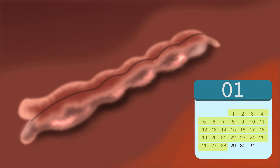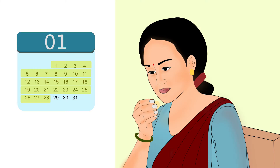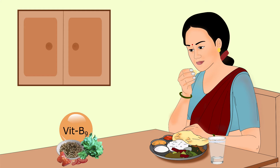Closure of the neural tube takes place within 28 days of conception. Until this time, the woman might not even know that she is pregnant. By the time she knows, it might be too late to prevent these defects. All women, especially of reproductive age, should take adequate folate-rich food.